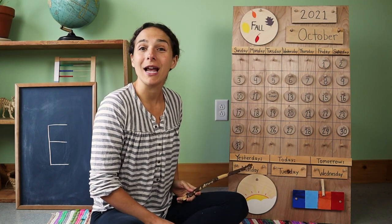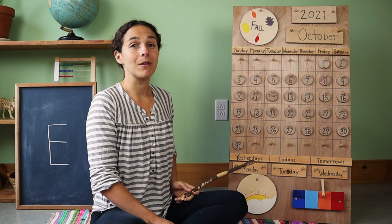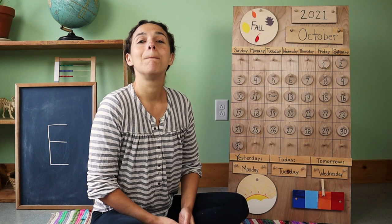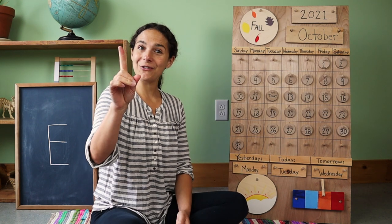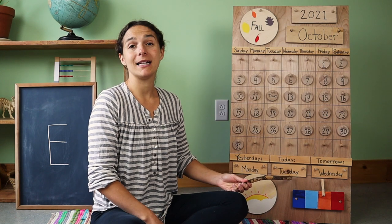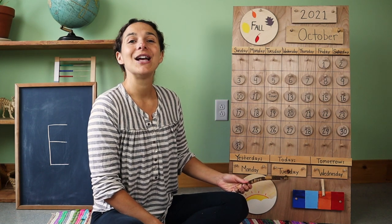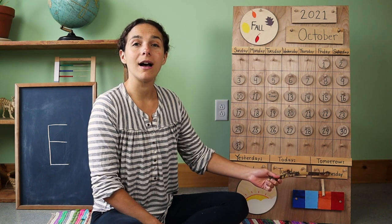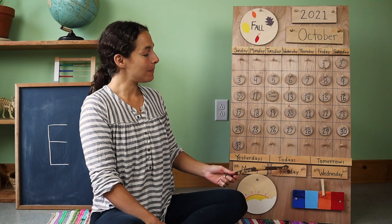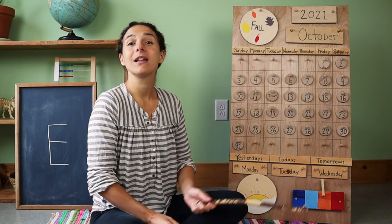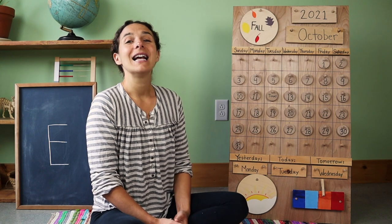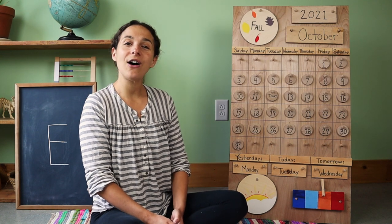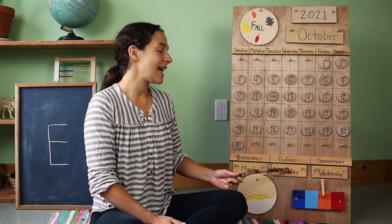Down at the bottom of the chart, we have the days of the week to go over. Yesterday was M — Monday, the first week day. That means that today is T — Tuesday, and tomorrow will be W — Wednesday. But let's sing Today is Tuesday together. It goes like this. Today is Tuesday, today is Tuesday, today is Tuesday, all day long. Today is Tuesday, today is Tuesday.